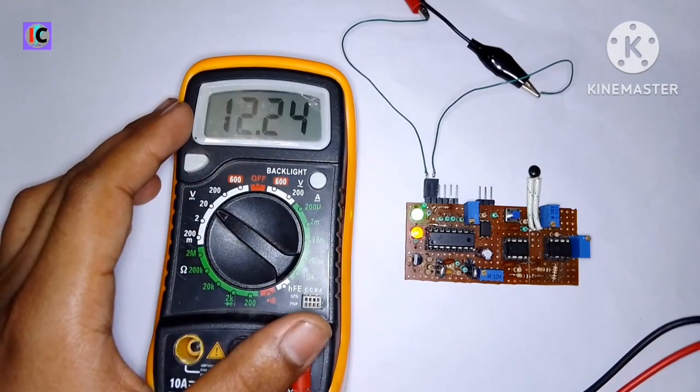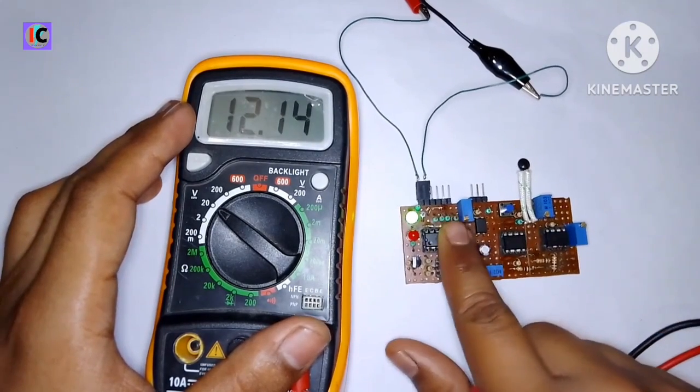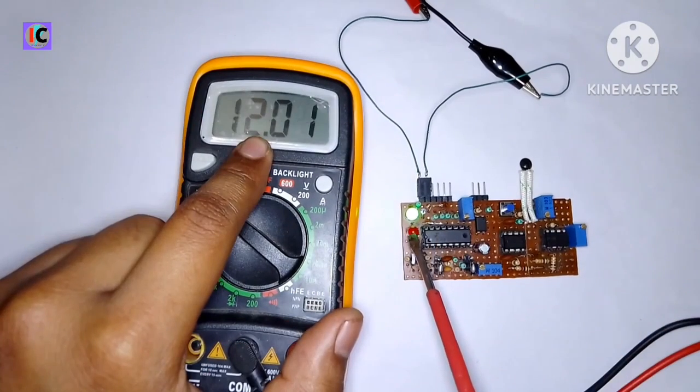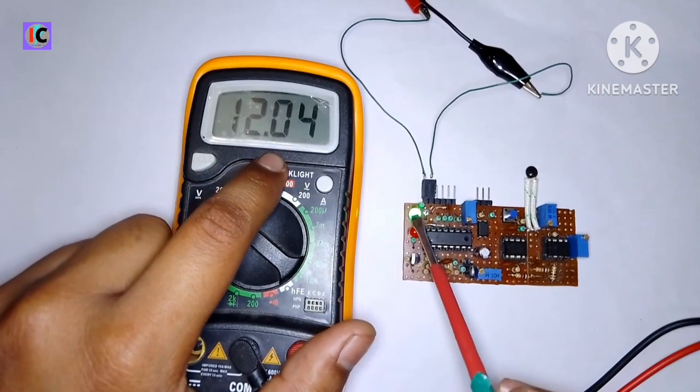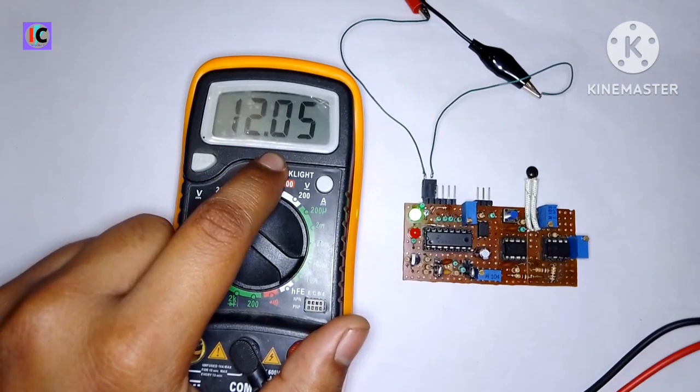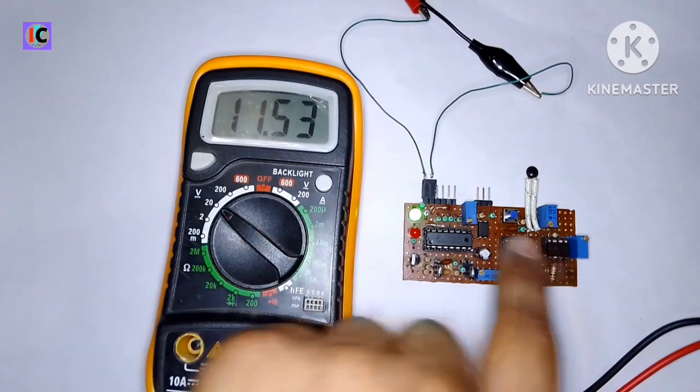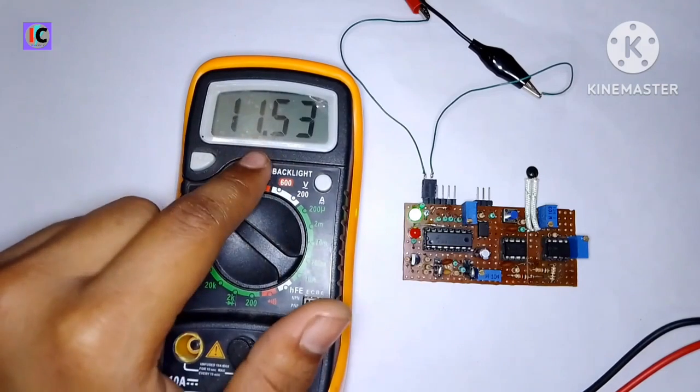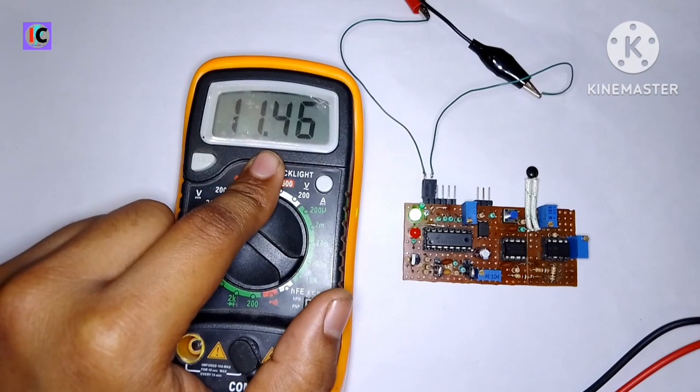When we push the reset switch, it will start working. The green LED will indicate power, and the red LED will indicate if any problem occurs like low battery protection or overheating protection.